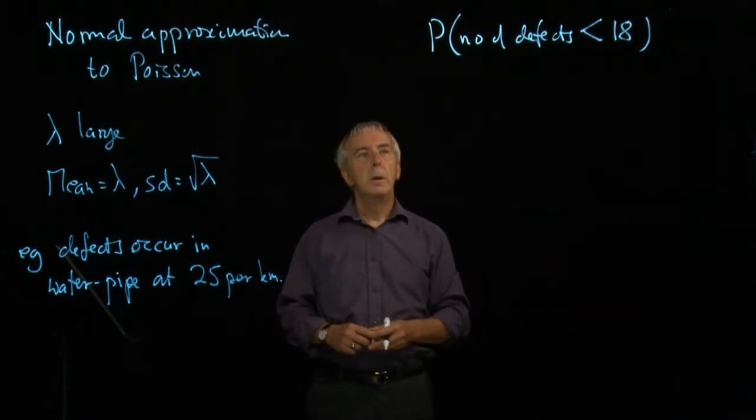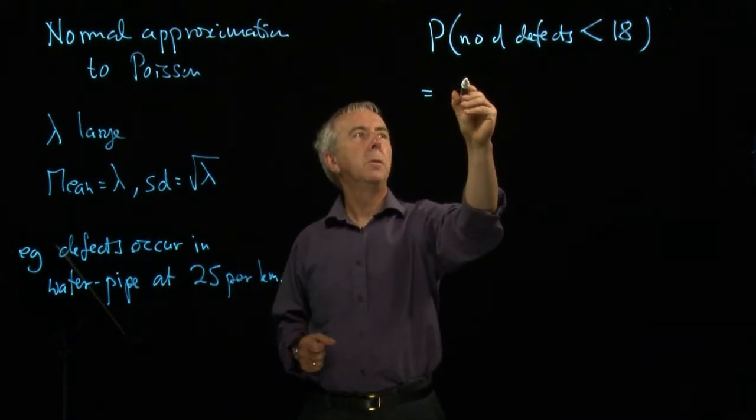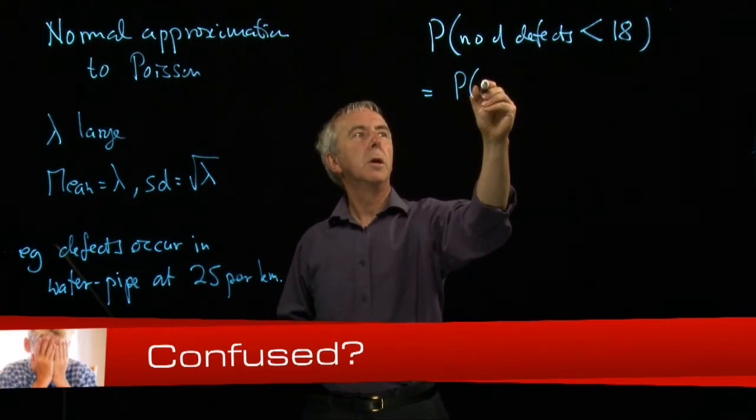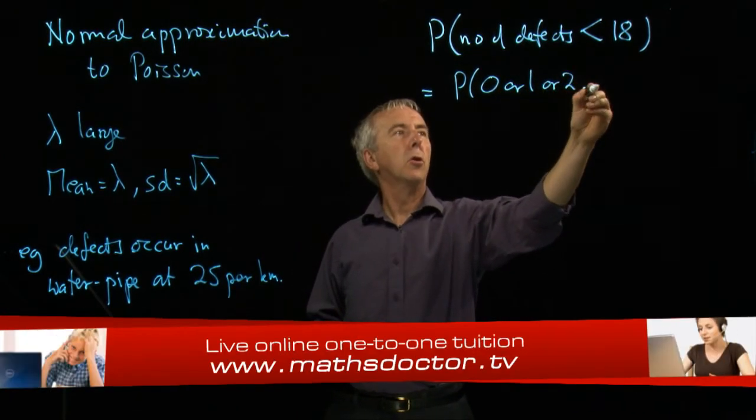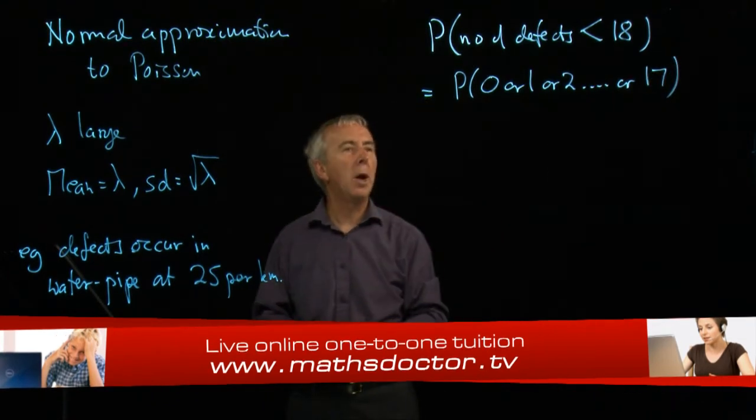Strictly speaking, that's a Poisson. So it's going to be the probability of 0 or 1 or 2 or 17. We'd have to go all the way up.